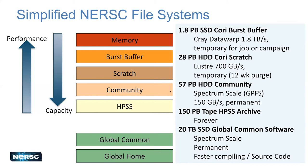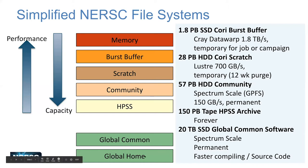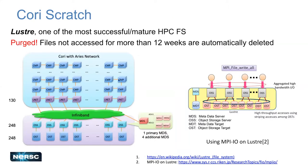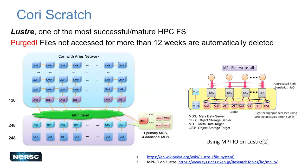Basically we've got Scratch, Community — which is more of a project file system — and then HPSS, which is tape storage. On the side is something optimized for software called Common, and then people's home directories. The one you encounter most if you're running jobs on Cori is Cori Scratch. This is a Lustre-based file system, which is one of the most mature HPC file systems.